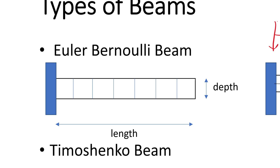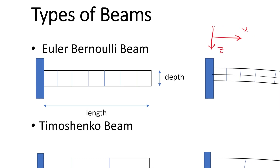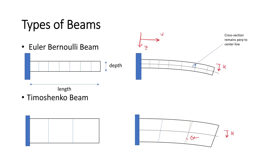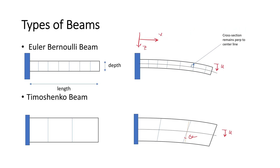Whenever the length-to-depth ratio is greater than or equal to 10, the use of Euler-Bernoulli beam suffices to capture the real effects on the structural response. But whenever this is not the case, the use of Timoshenko beams is a must.